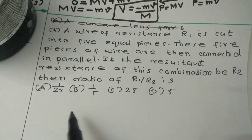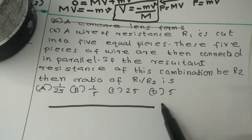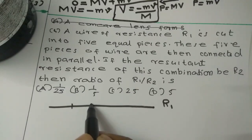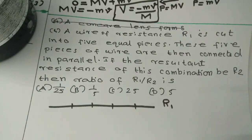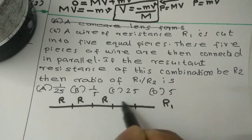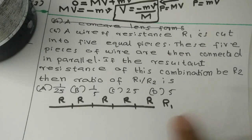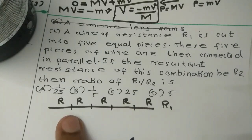A wire of resistance R is cut into 5 equal parts. The total resistance equals R1. We have 5 equal parts — that is 1, 2, 3, 4, 5. These parts are then connected in parallel combination.